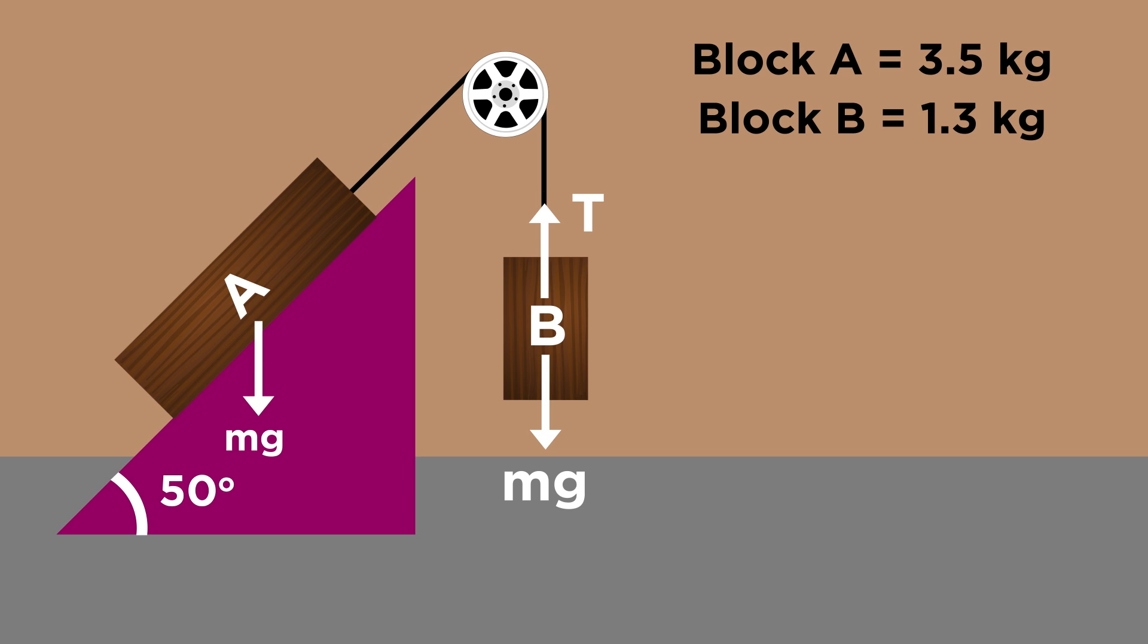For the block on the ramp, we have gravity, which we can split into components that are perpendicular and parallel to the surface it sits on, which means we also have a normal force and then the tension from the string. Now let's fill in some values.